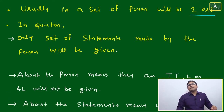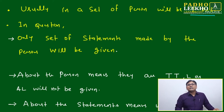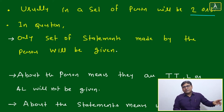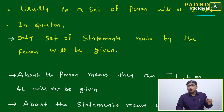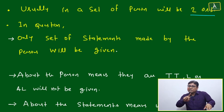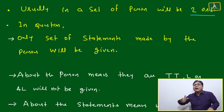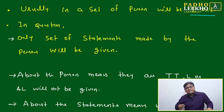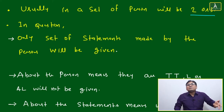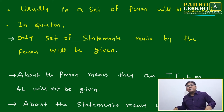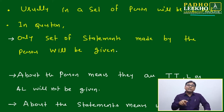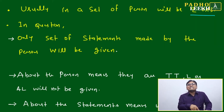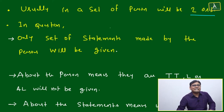For example, Ram, Mohan, and Siam are three persons who made some statements. The question will not tell you Ram is a truth teller, Siam is a liar, or Mohan is an alternator. You have to assume: if Ram is a truth teller, then Ram's statements will be correct, and accordingly all other persons' statements should be consistent — they should not contradict each other.